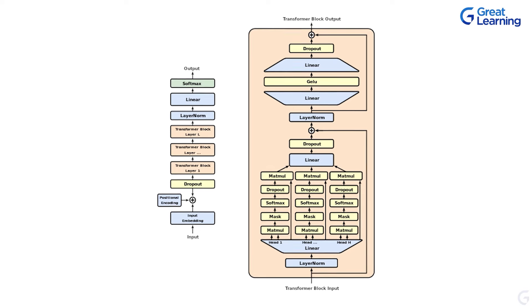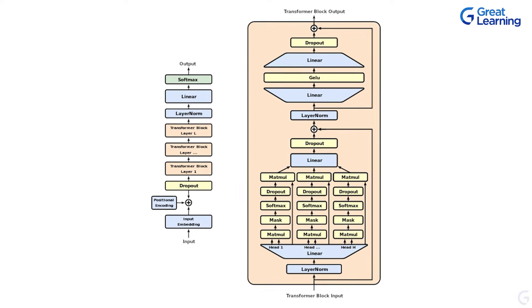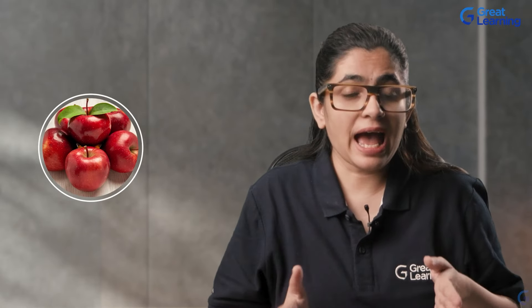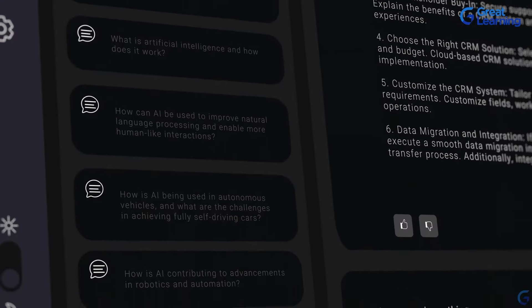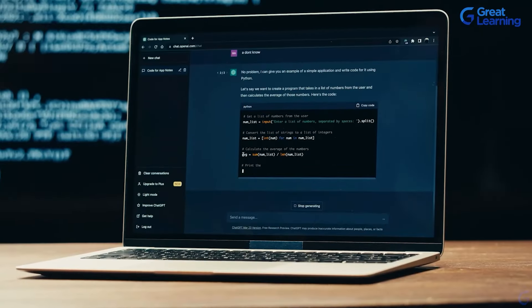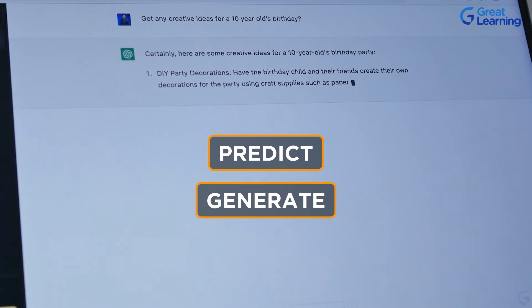GPT is built using a special architecture called a transformer, specifically the decoder part of the transformer. This structure is really good at understanding the context of words. For example, it knows the difference between 'apple' the fruit and 'Apple' the company, based on the surrounding words. The transformer decoder has layers — imagine a sandwich. Each layer processes information and passes it to the next, getting more refined with each step. This helps GPT understand and generate human-like text. When you give GPT a prompt like 'once upon a time,' it uses everything it learned to predict and generate the next part of the story, one word at a time. It's like a super smart autocomplete.